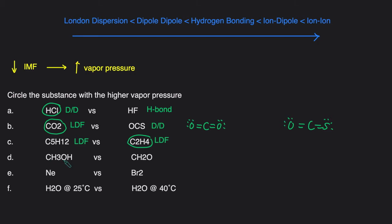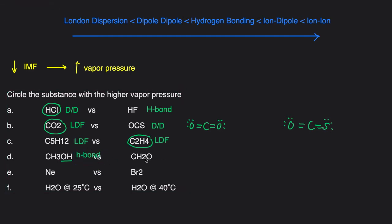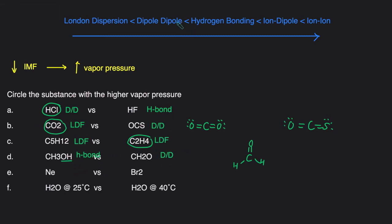CH3OH: immediately we see there's an OH here, so we know this compound will have hydrogen bonds. The next one, CH2O, looks like this and is not symmetrical because you have one O and two H's, which makes it polar. Since it's polar, its primary intermolecular force will be dipole-dipole. Dipole-dipole is weaker than hydrogen bonding, so CH2O will have the higher vapor pressure.